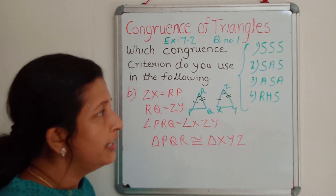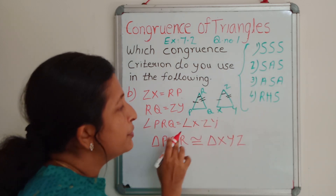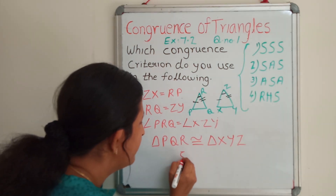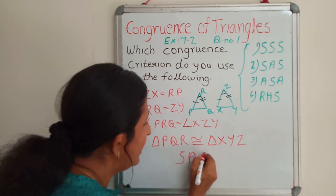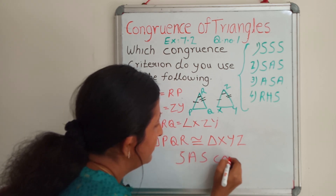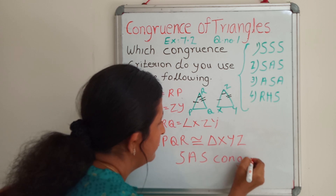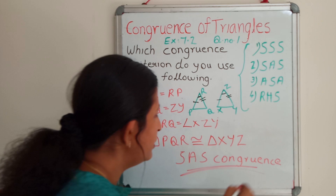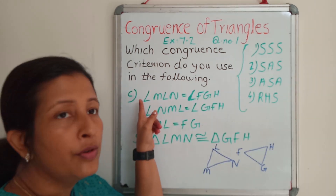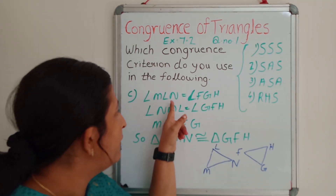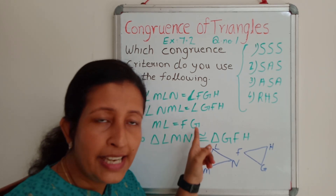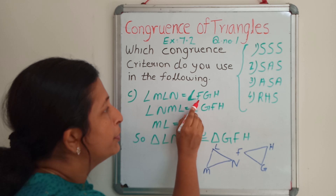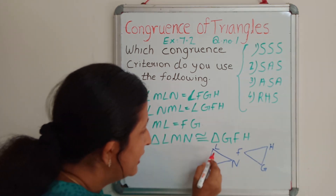So the criteria used for this congruency is SAS congruence. For question number C, they have again given 3 data: angle MNN is equal to angle FGH.